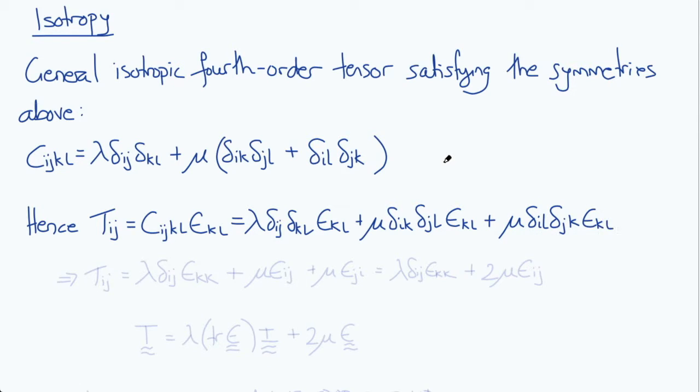And now we can see that these expressions simplify, so we get Tij equals lambda times δij, and δkl εkl is εkk. This kl turns this l into a k. δik δjl times εkl becomes εij, k becomes an i, l becomes a j.